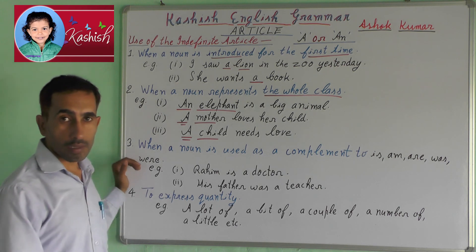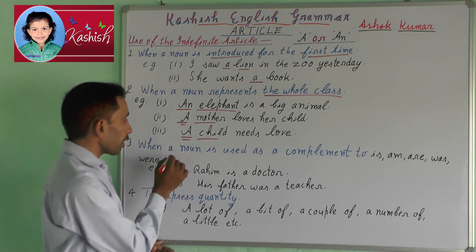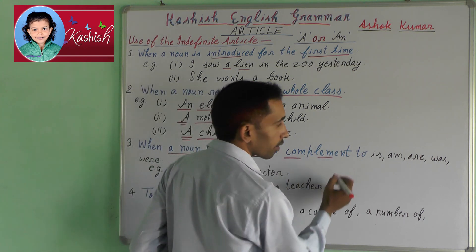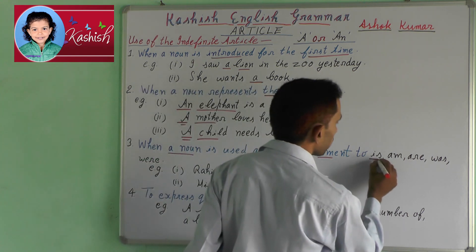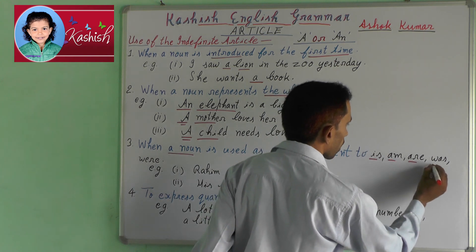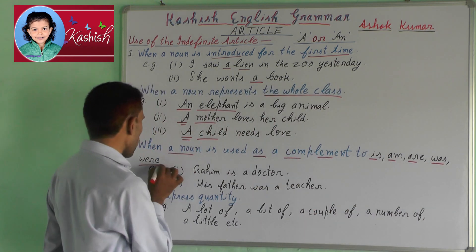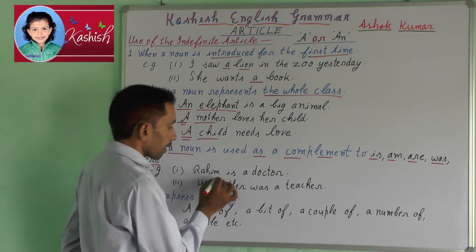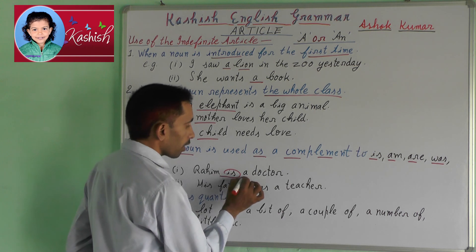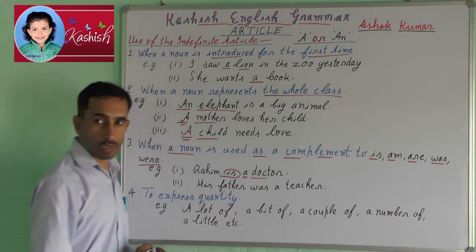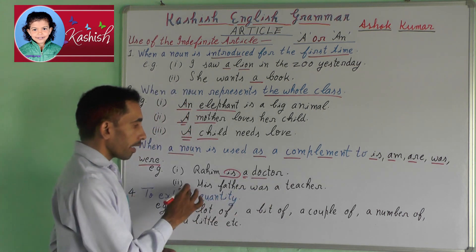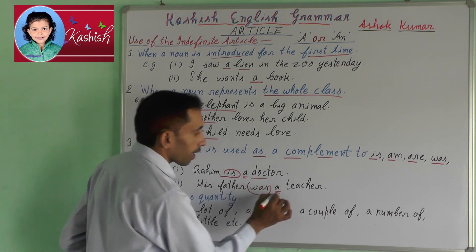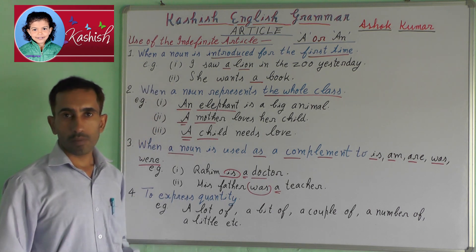Third, when a noun is used as a complement to am, are, was, were. For example: Rahim is a doctor. His father was a teacher.